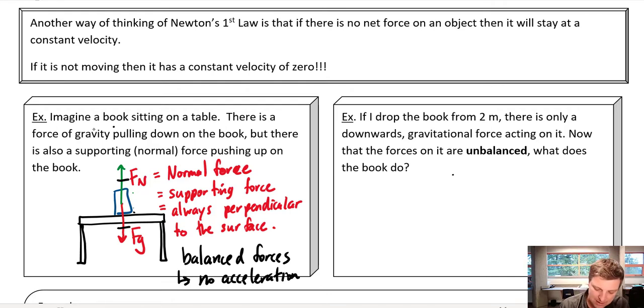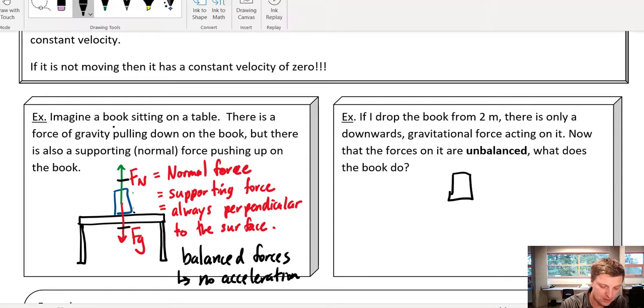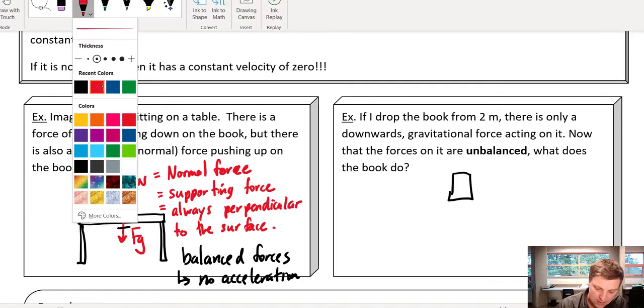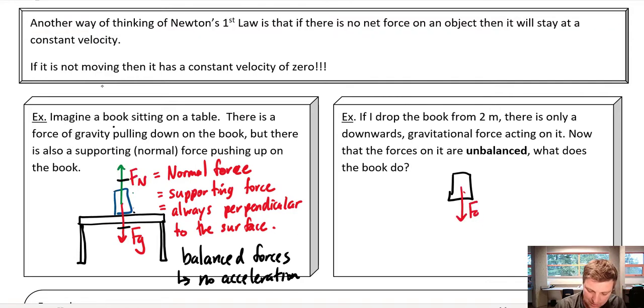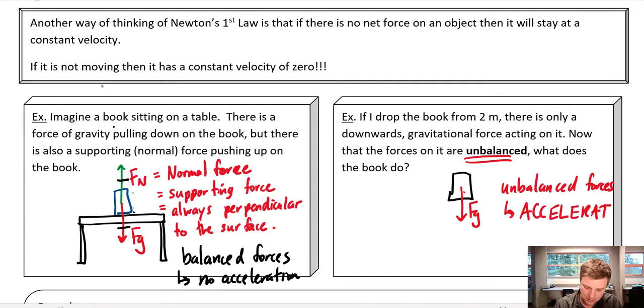If we compare that to an example where you take that same book and you just drop it off the table, then I would have the book falling, gravity pulling down, and there is nothing else working against that. This is what we mean by unbalanced forces. And so the gravity pulling down isn't being stopped by anything. And so what's going to happen is this is going to accelerate. So when forces are balanced, then things just either keep doing what they're doing, they're moving, or they're not moving, but they stay the same.